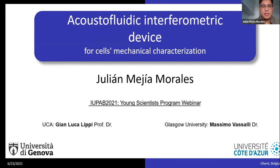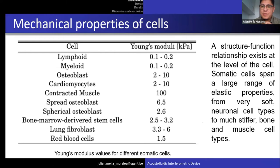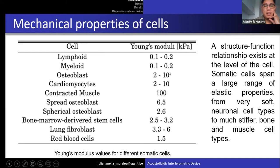I'd like to start by pointing out that somatic cells span a wide range of different Young's modulus values. That implies they have different stiffness and different elasticity. For instance, there are really elastically compliant lymphoids or myeloids, but also really stiff cells like spread osteoblasts or contracting muscle. This makes clear that the elasticity or mechanical properties of cells is a hallmark of different cell types. This is an example in humans, but it holds for the whole animal domain.